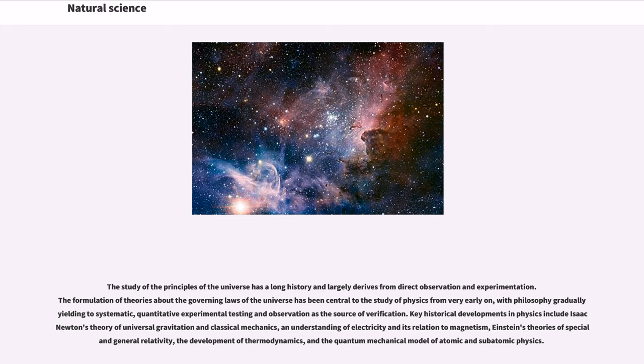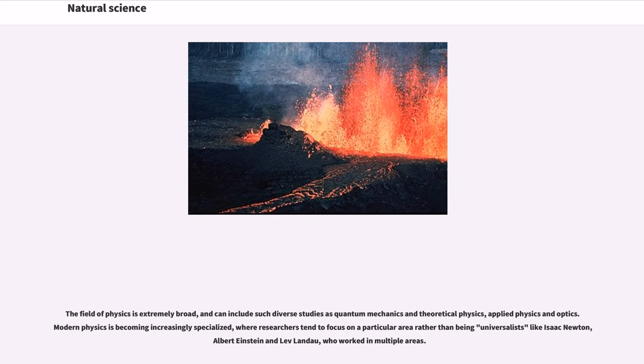Key historical developments in physics include Isaac Newton's theory of universal gravitation and classical mechanics, an understanding of electricity and its relation to magnetism, Einstein's theories of special and general relativity, the development of thermodynamics, and the quantum mechanical model of atomic and subatomic physics. The field of physics is extremely broad, and can include such diverse studies as quantum mechanics and theoretical physics, applied physics and optics. Modern physics is becoming increasingly specialized, where researchers tend to focus on a particular area rather than being universalists like Isaac Newton, Albert Einstein, and Lev Landau, who worked in multiple areas.